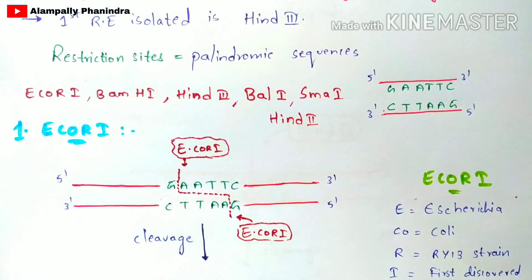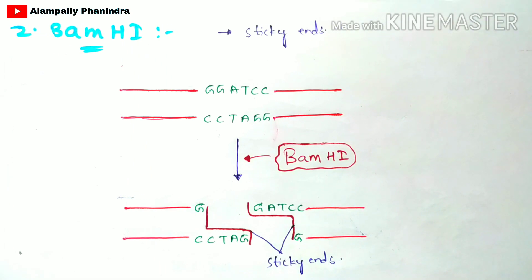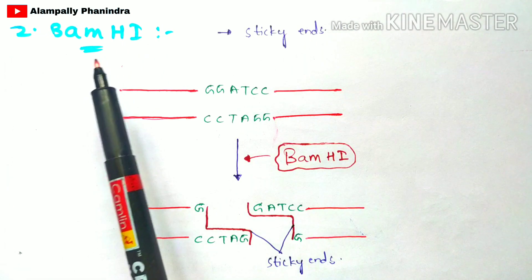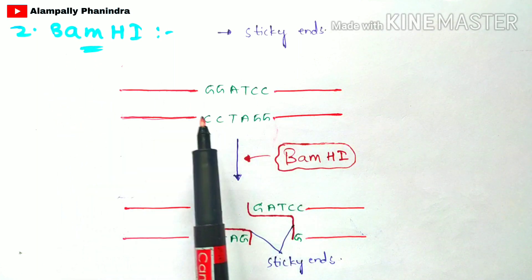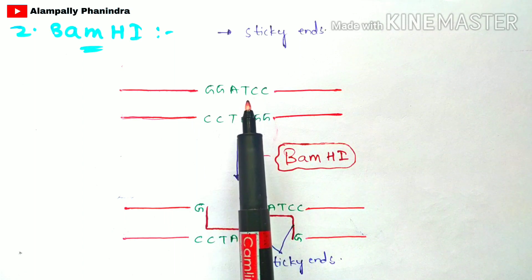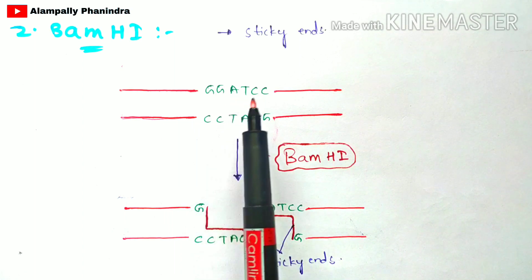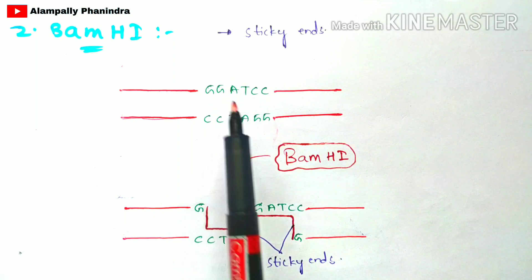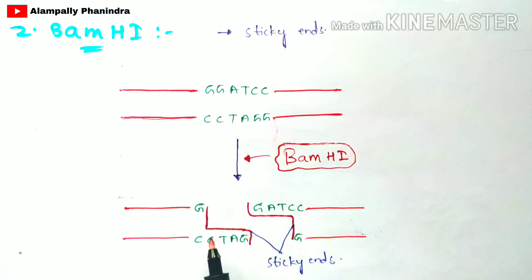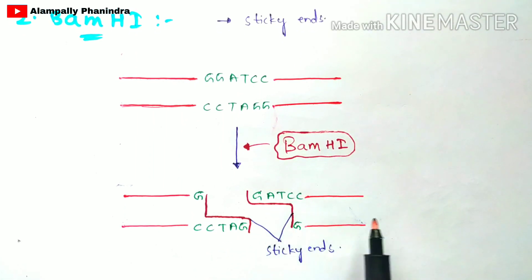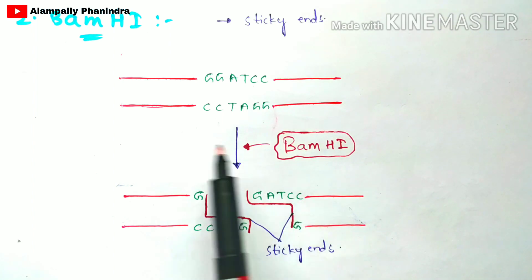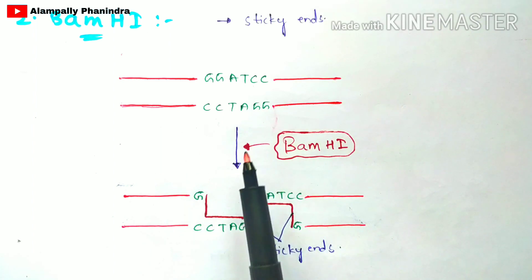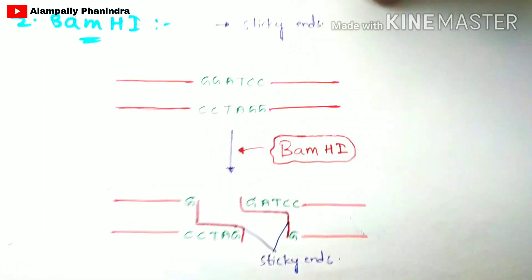Now let us take another example — BamHI, the second type of restriction endonuclease enzyme. BamHI will also produce sticky ends. In the same manner, the palindromic sequence at the restriction site is recognized, and BamHI performs its function on this restriction site, producing sticky ends. Once DNA ligase is applied to the separated double-stranded DNA, both sticky ends will come together and get attached with each other.